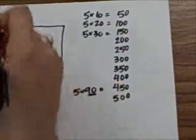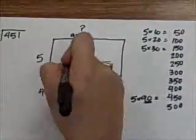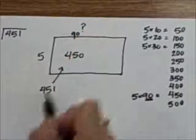So I'm going to take my 90 and put it at my number of columns. I'm going to write 450 in the middle.